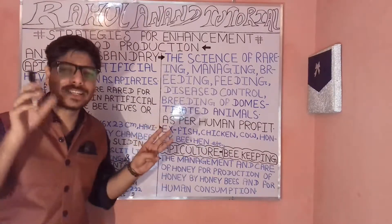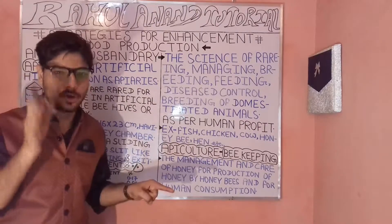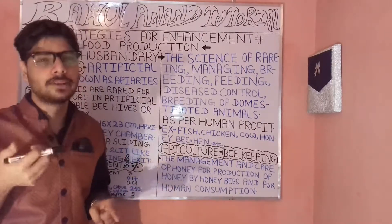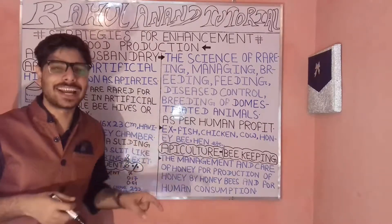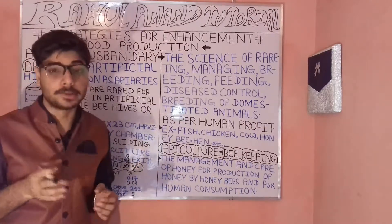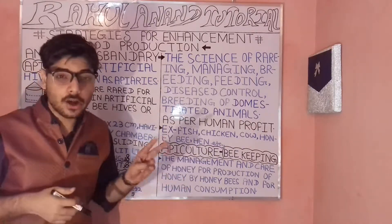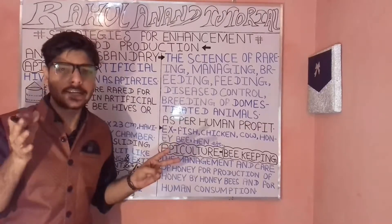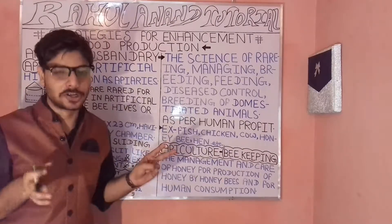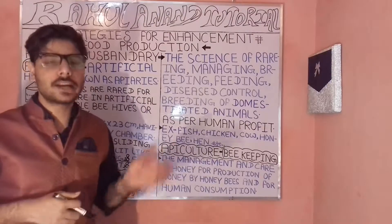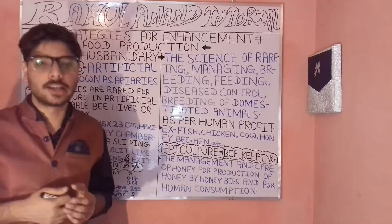Bees are of three types: worker bees, drone bees, and queen bees. The queen is the ruler of the colony. The drones play a security role — they are like security guards of the kingdom — and their role is directly related to protecting the queen and the colony.